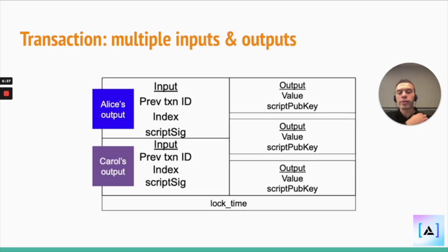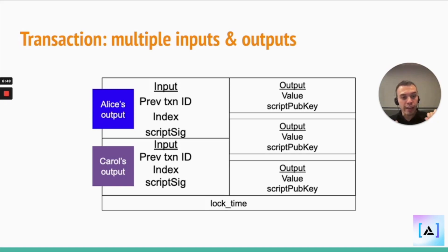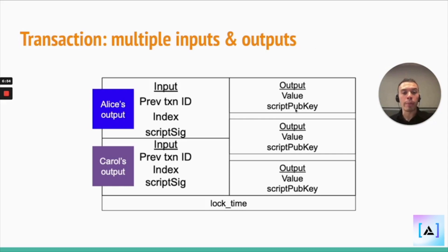So it kind of looks like this — say I'm trying to buy a car, and Alice and Carol have both in the past paid me somehow in Bitcoin. I need to point to their specific outputs saying that they're paying me, in order to consume them and create further outputs out of that.